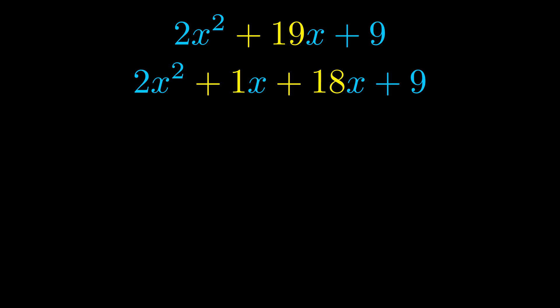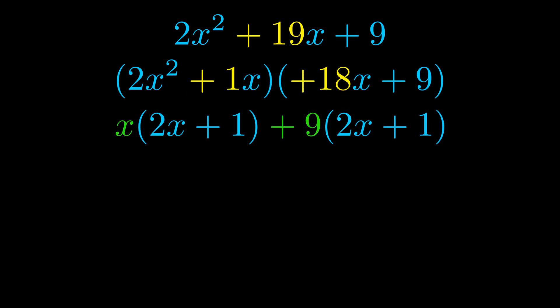Once we've done this, we go ahead and we put parentheses around the first term and the last term. And we do that so that we can take the greatest common factor out of both terms. We can see the greatest common factor is now outside in green.